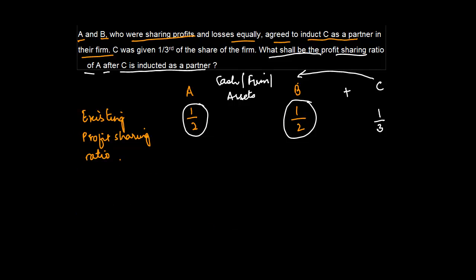So what will happen is that out of one half, some share is going to be reduced from A. Out of this one half, some share is going to be reduced from B, and whatever is the reduction - let's say this is X and this is Y - that is going to be given to C.